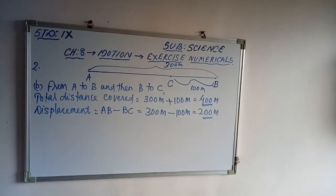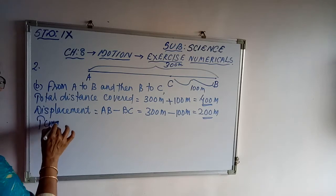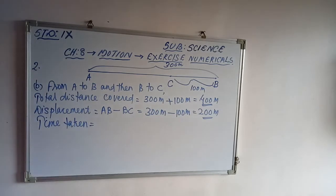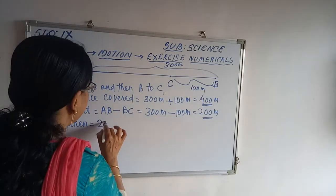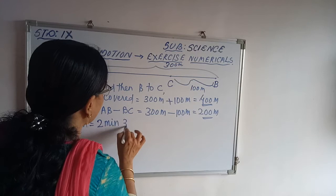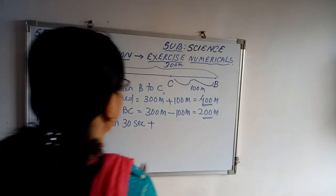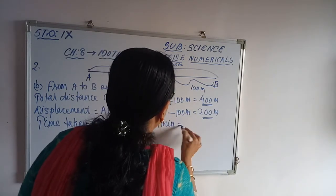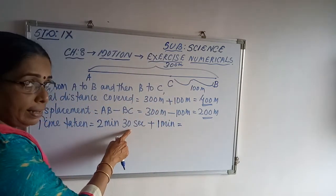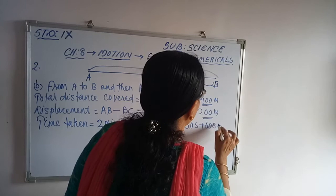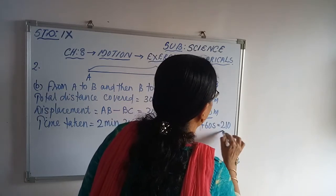Distance and displacement are different here. The total time taken: from A to B is 2 minutes 30 seconds, that is 150 seconds, plus from B to C is 1 minute, that is 60 seconds. Total time equals 210 seconds.